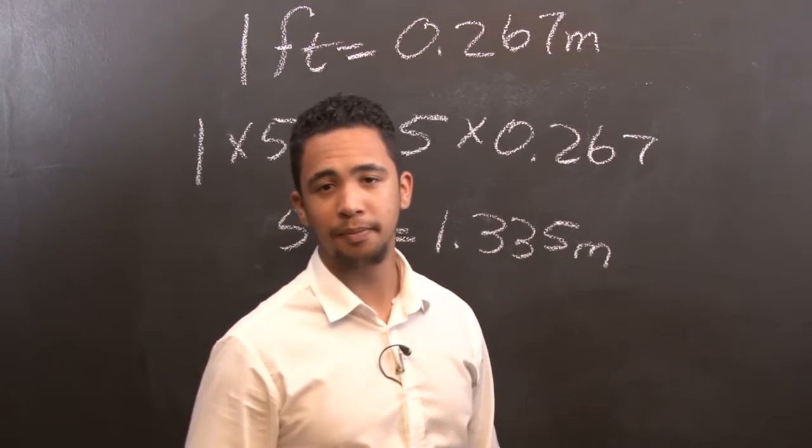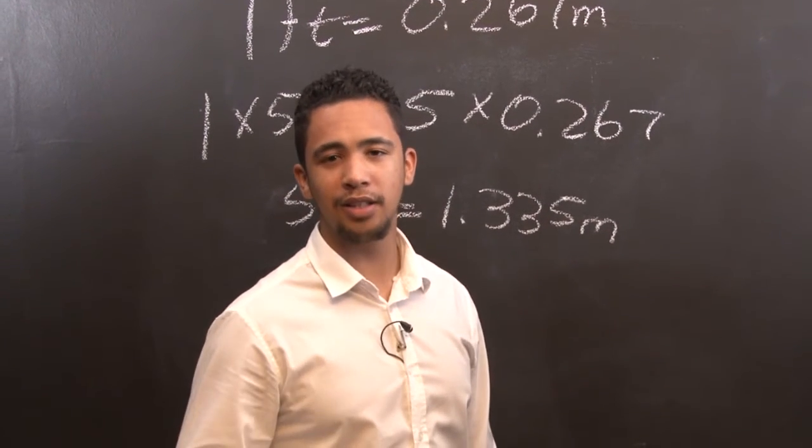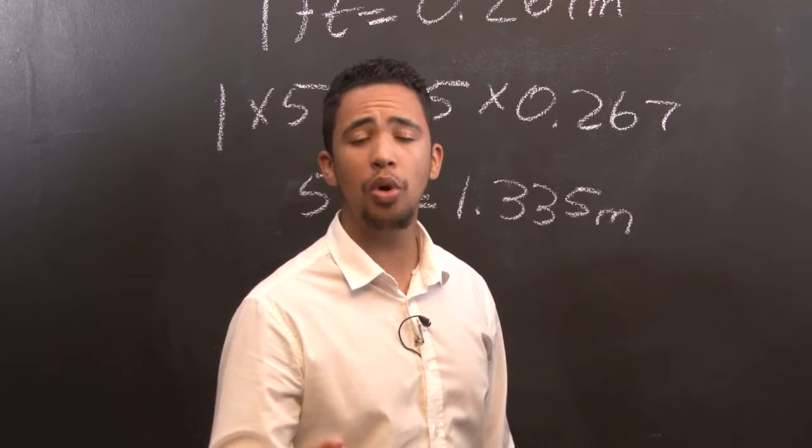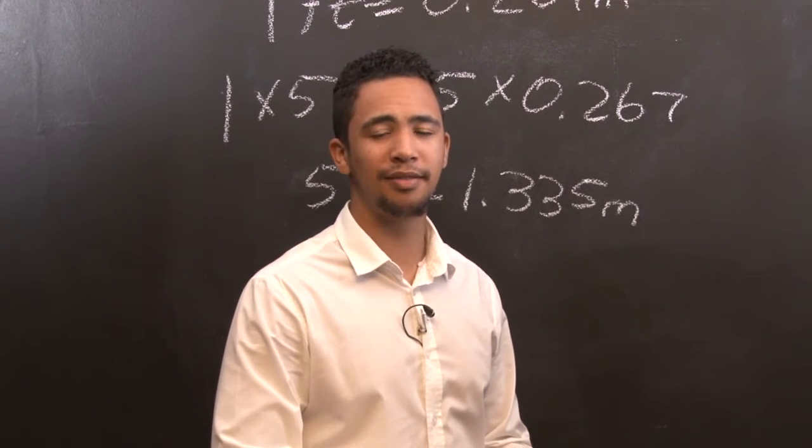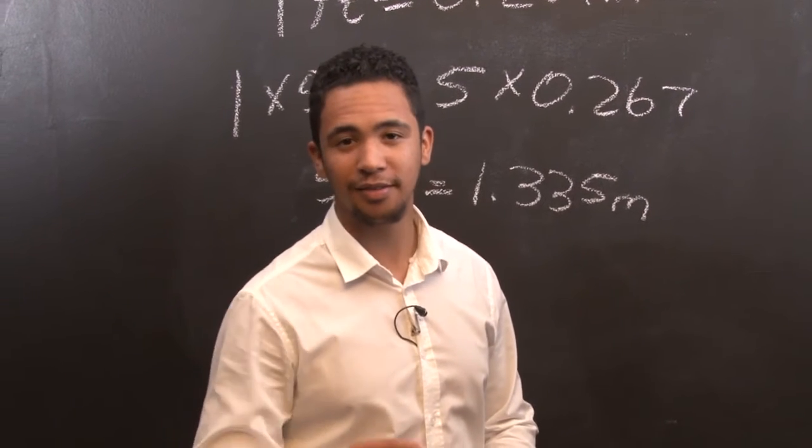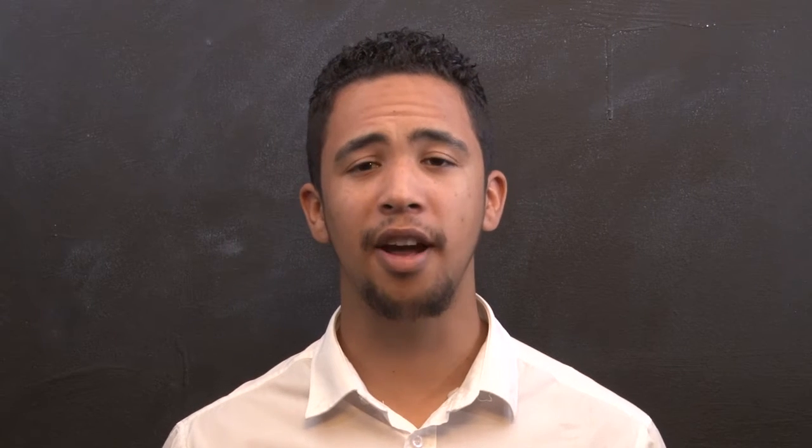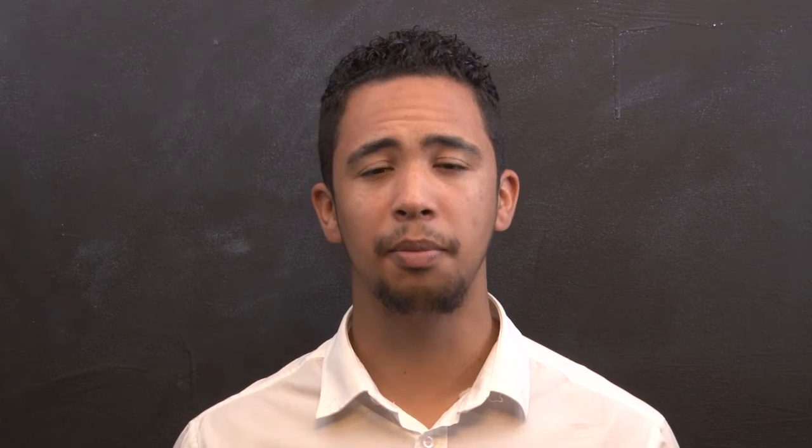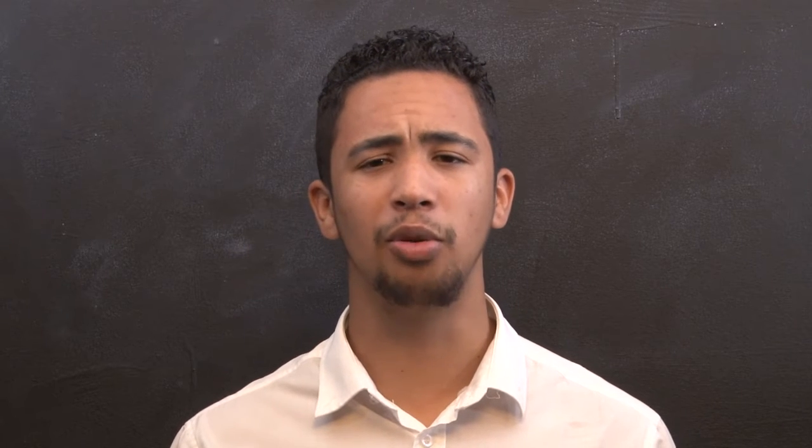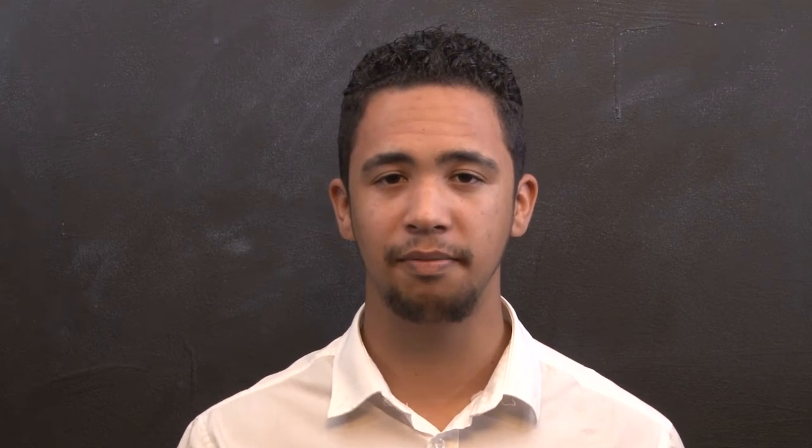So remember, the conversion factors are always given to you or can be searched online, so no need to worry. The next topic that we are going to look at is area and volume. Remember, you can find the formulas for perimeter, area and volume inside your learner guide.